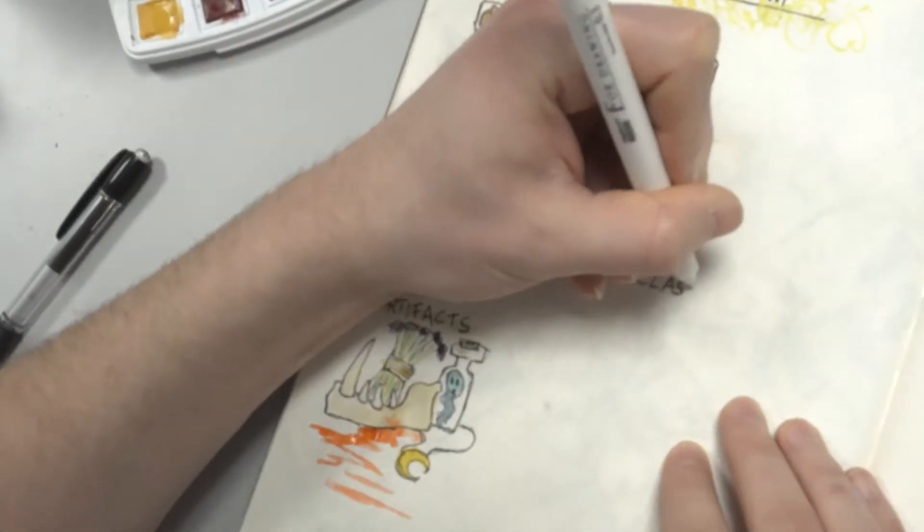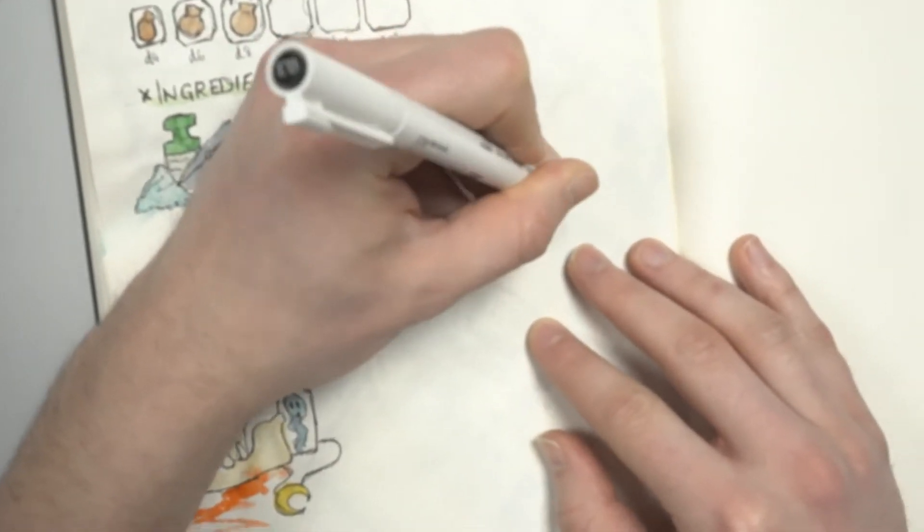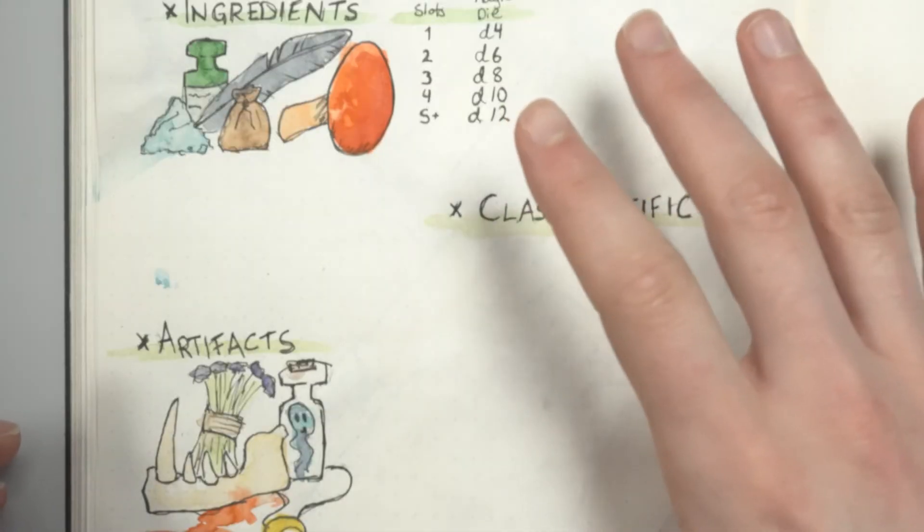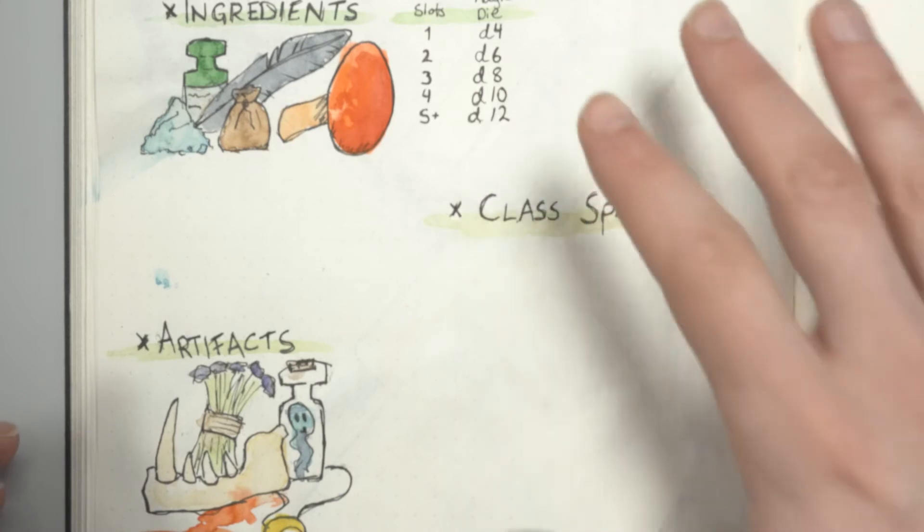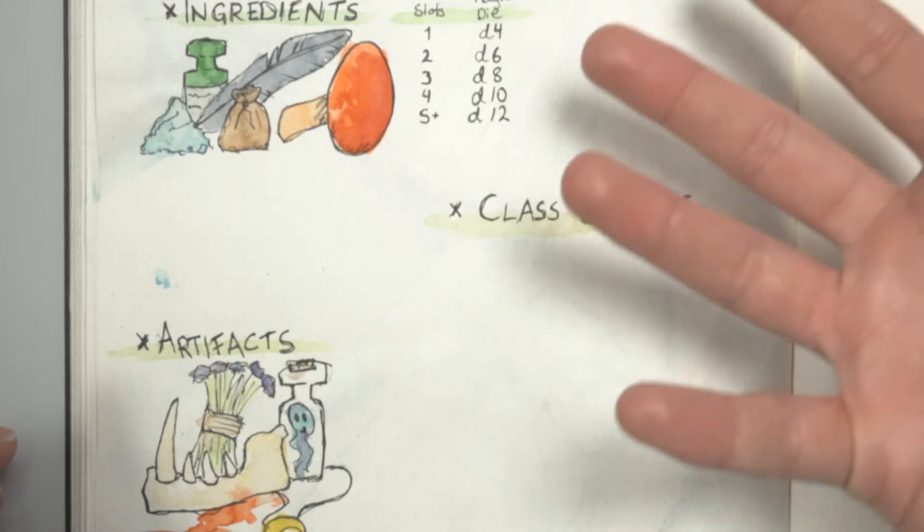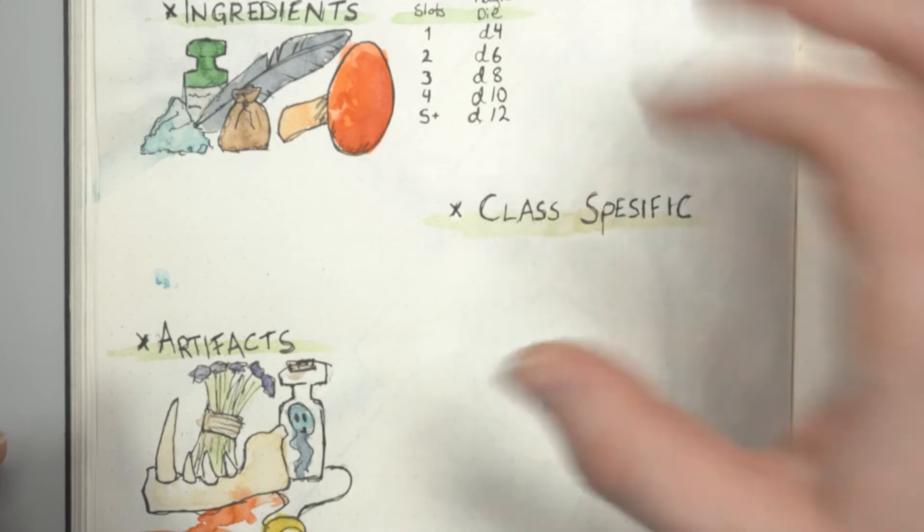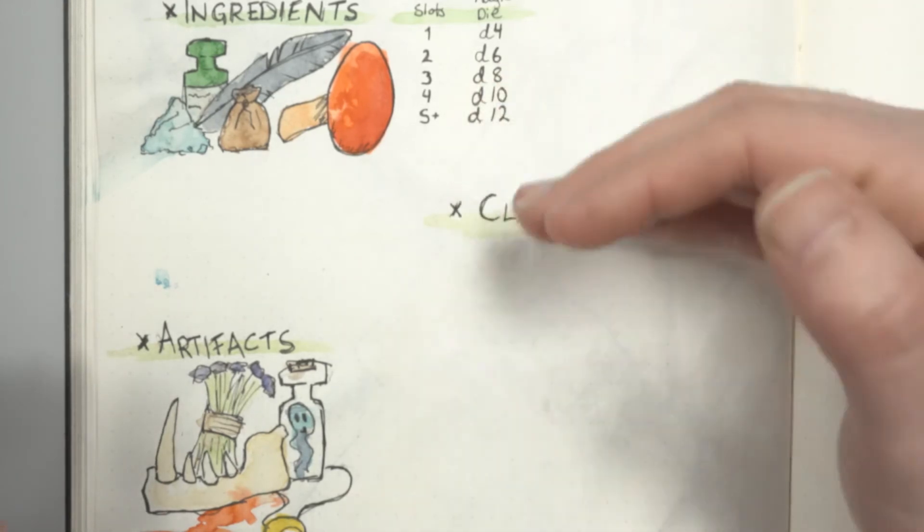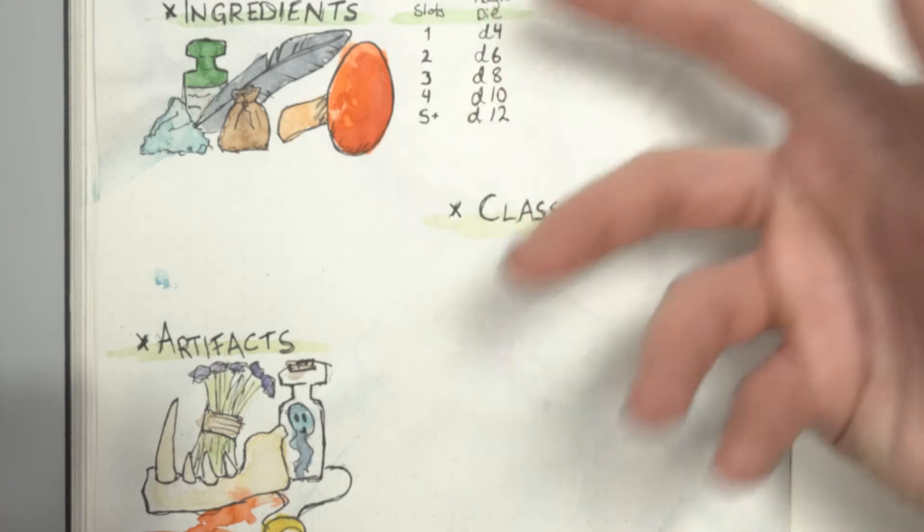That leaves us with class-specific components. These are like specialized items, because they also have a specific purpose. You can cast many generic spells with ingredients, but to get the powerful and specialized spells, you need class-specific components in your pouch.